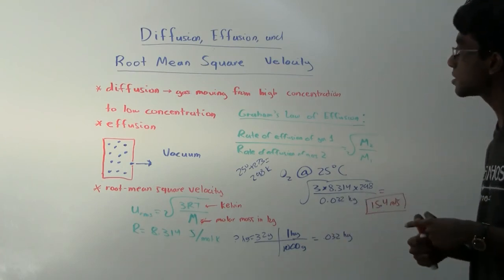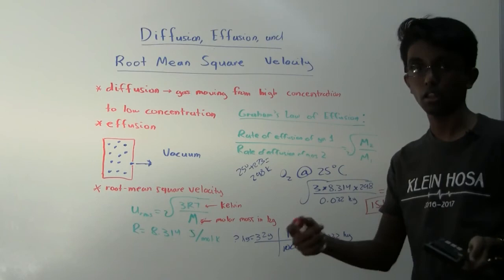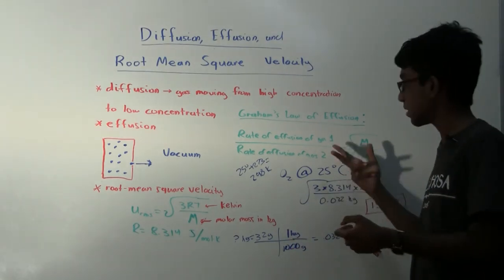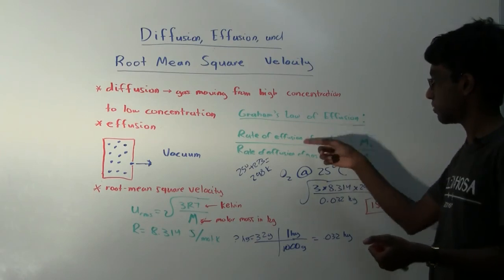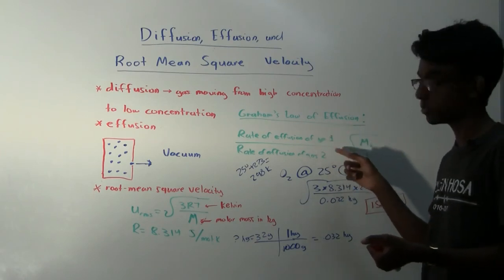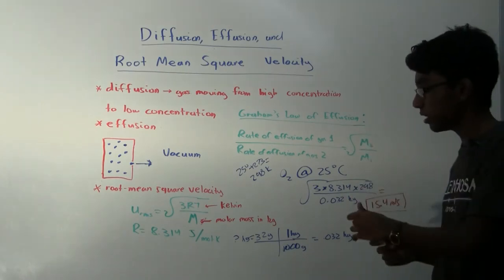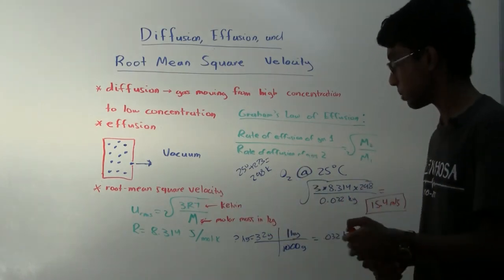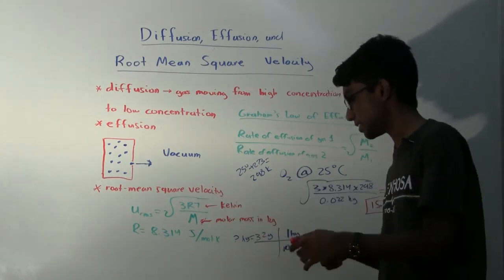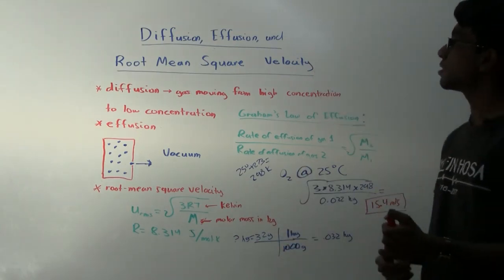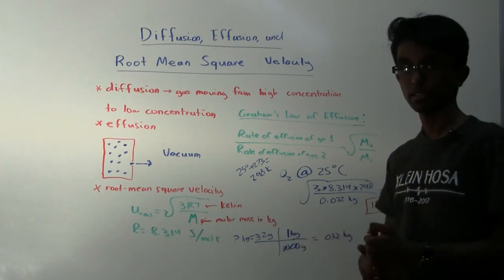So 3 simple concepts, just a lot of tricks within the equation. The big trick here is understanding that the rate of effusion of gas 1 over rate of effusion of gas 2 equals the molar mass is flipped. The square root of that. And here, two important things to remember: temperature in Kelvin and the molar mass in kilograms, not grams. Diffusion, effusion, and root mean squared velocity is pretty simple.